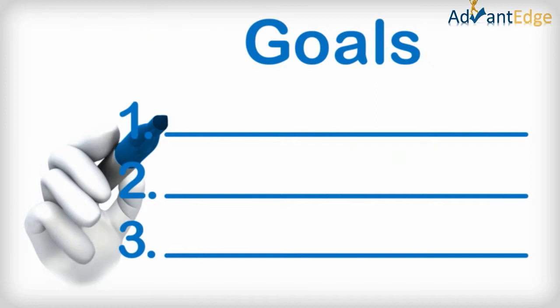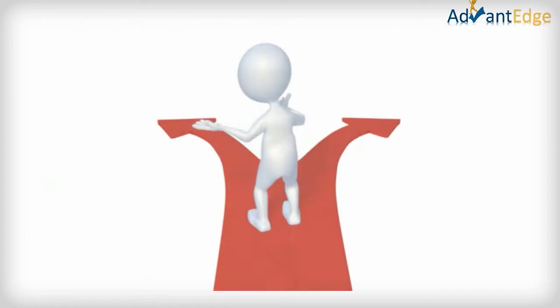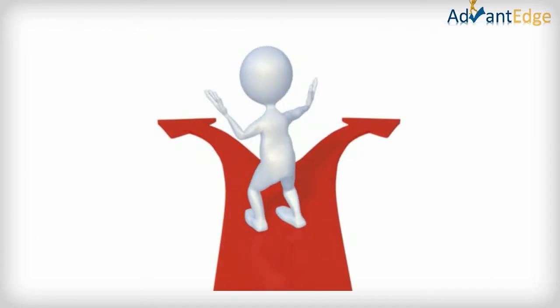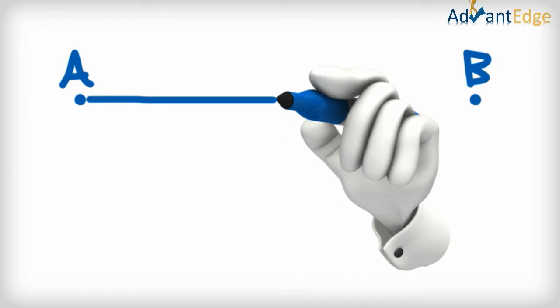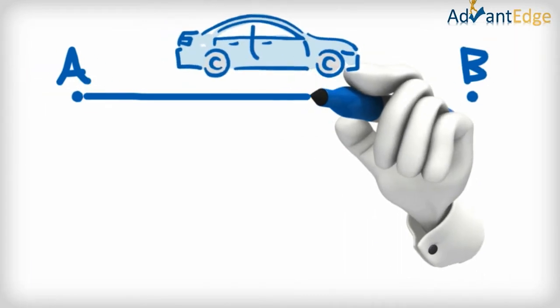When you go somewhere, whether a holiday or just a drive to the countryside or the beach, do you just get in the car and choose roads at random? No. You started by deciding on your destination, then considered how to get there, what you would need to take with you, how long, and so on and so forth.